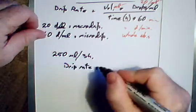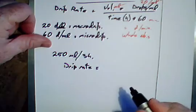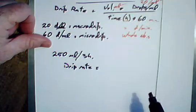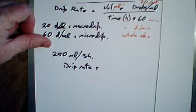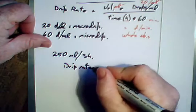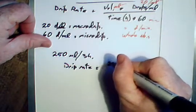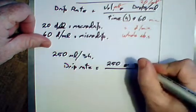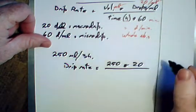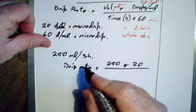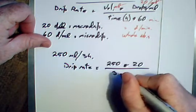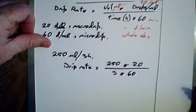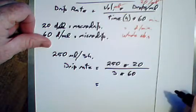So what we're going to do is drip rate equals the volume, which is 250 milliliters. Keep it in the right units, always going to be in milliliters because that's what we're using, because that's what the drips are in: 20 drops per milliliter. So we have 250 times 20 per milliliter over three hours and the 60 to convert that into minutes.